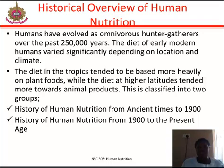Around 1770, Antoine Lavoisier, the father of nutrition and chemistry, discovered the details of metabolism, demonstrating that the oxidation of food is a source of body heat. In 1719, George Ford recognized calcium as necessary for fowl survival. In the early 19th century, the elements carbon, nitrogen, hydrogen, and oxygen were recognized as the primary components of food, and methods to measure their proportions were developed. In 1840, Justus von Liebig discovered the chemical makeup of carbohydrates, fats, and proteins.